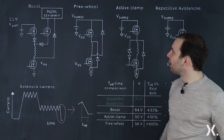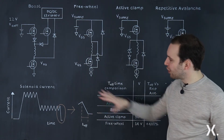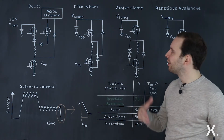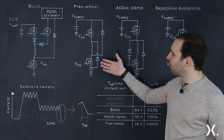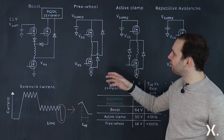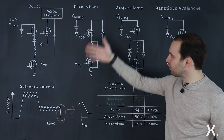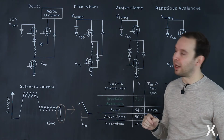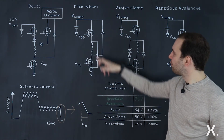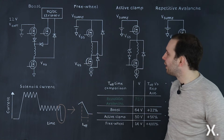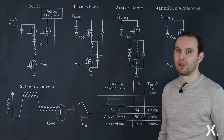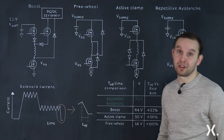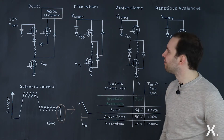The next design is the freewheel diode. The general functionality is very similar in terms of the solenoid current. The difference is at the turn-off event: instead of dissipating and controlling the energy in a very efficient manner like the boost circuit does, you dissipate the energy through the freewheel diodes, so your energy efficiency is dictated by the diodes, which are naturally somewhat energy inefficient.